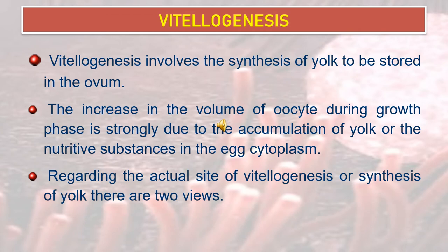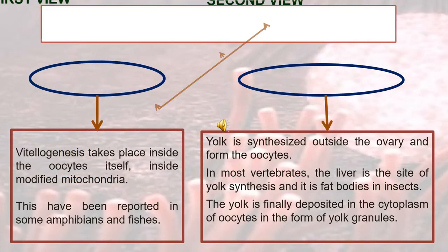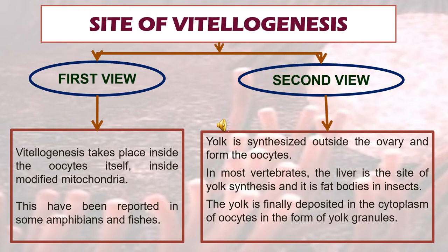Vitalogenesis involves the synthesis of yolk to be stored in the ovum. The increase in the volume of the oocyte during the growth phase is strongly due to the accumulation of yolk or nutritive substances in the egg cytoplasm. Regarding the actual site of vitalogenesis or synthesis of yolk, there are two views.